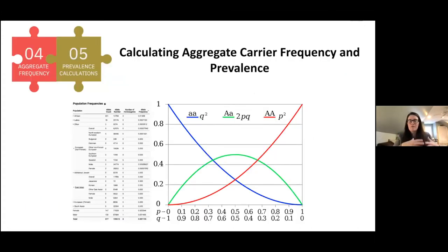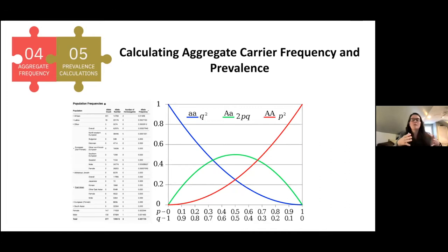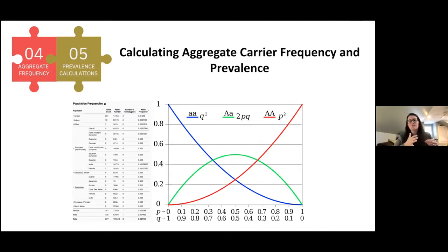Once we had that variant list and put it through full curation, we spent a lot of time confirming this is the most comprehensive list we can get — inclusive but not overly inclusive. We don't want to include variants of uncertain significance or benign variants that might inflate the frequency. Because once we have that final list, we go into gnomAD and ask for all the allele frequency information — how many times were these variants seen in the average population — for both the global population and subpopulations.